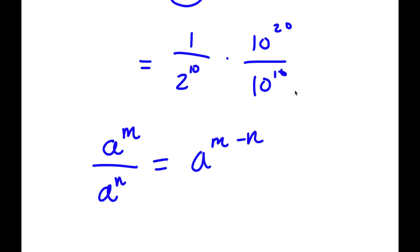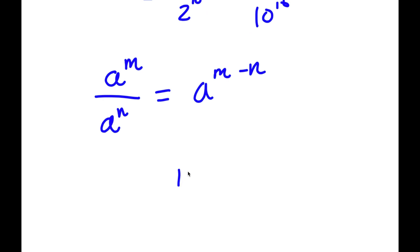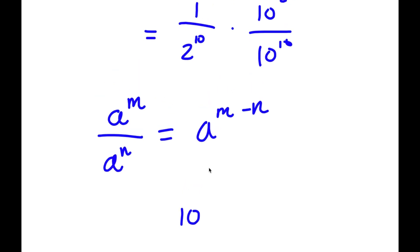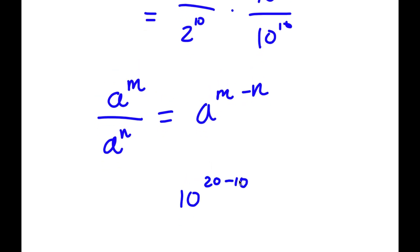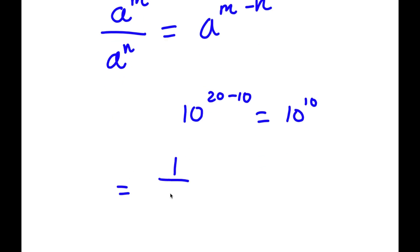So in this case, 10 to the power of 20 over 10 to the power of 10 is going to equal 10 to the power of 20 minus 10, which is equal to 10 to the power of 10. So now I have 1 over 2 to the power of 10 times 10 to the power of 10.